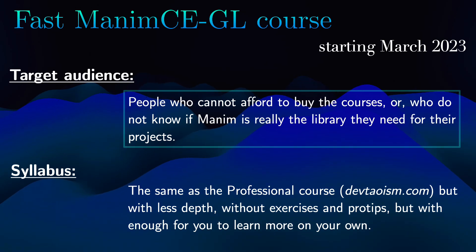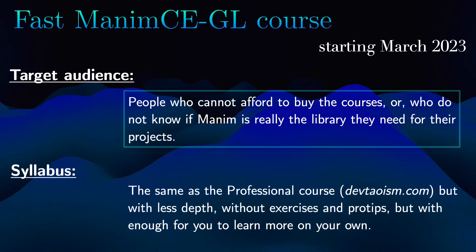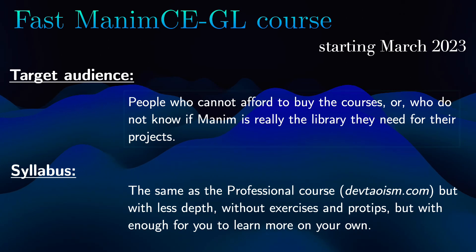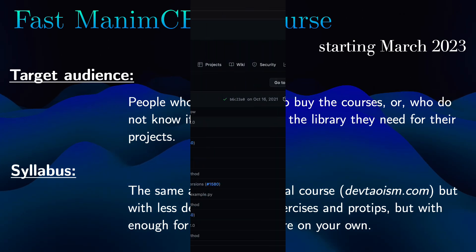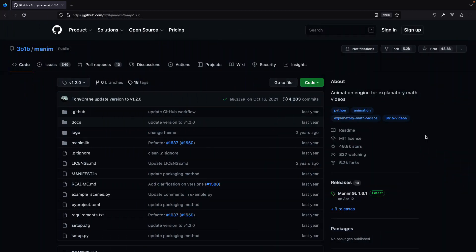This course is intended for people who cannot afford to buy the courses, or who do not know if Manum is really the library they need for their projects. Something to keep in mind is that the version of Manum GL that I'm going to teach will be version 1.2, since it is the fastest and most stable version of Manum GL.